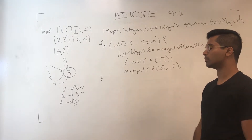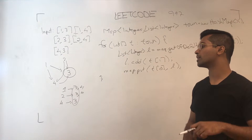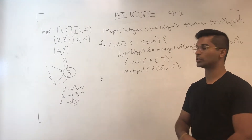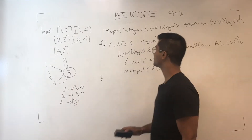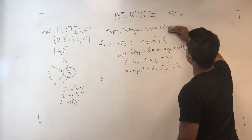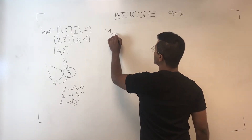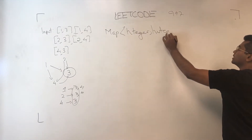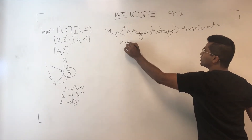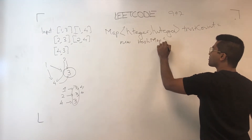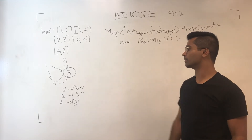Now what we have to do is find how many people trust three, how many people trust one, how many people trust two. We need to find the key which is trusted by everyone except one — because everyone in the town is going to trust the judge, but the judge doesn't trust anyone. So we have a map of integer and integer key-value pair and we'll call it trustCount, using a new HashMap.